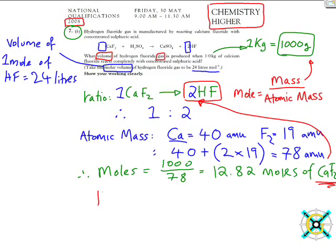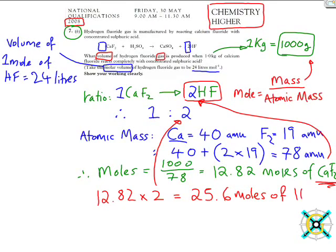We need to work out 12.82 times 2, which is this ratio here, which is going to give us 25.6 moles of HF.